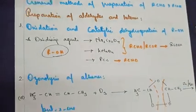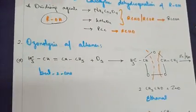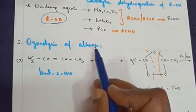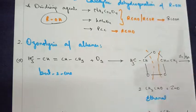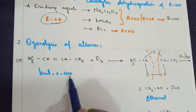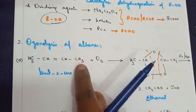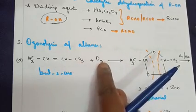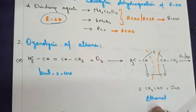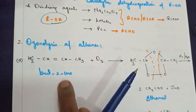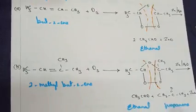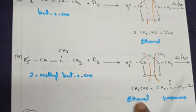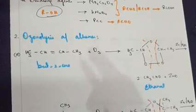The second type of preparation is ozonolysis of alkene, which you have learned in standard 11 — this is just a revision. When an alkene is treated with ozone (O3), we get an aldehyde. An alkene can give either an aldehyde, or a mixture of an aldehyde and a ketone.